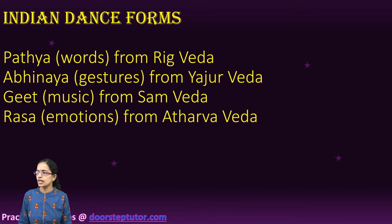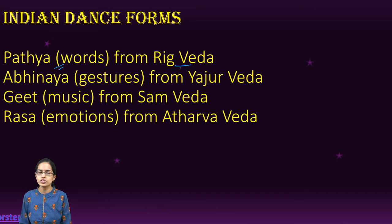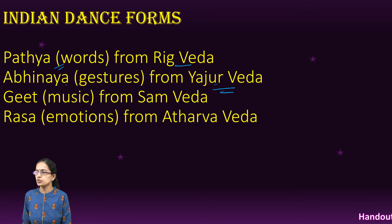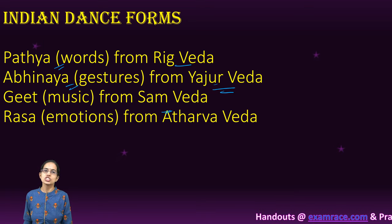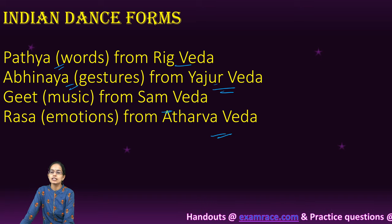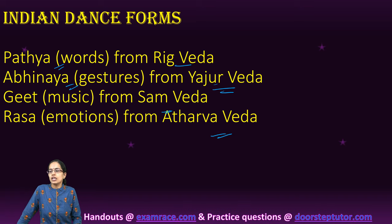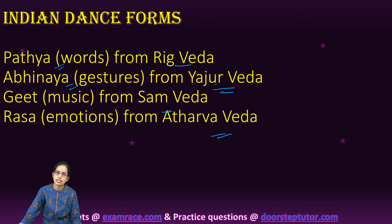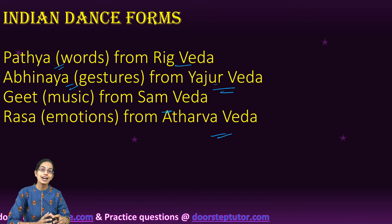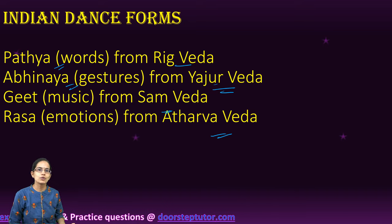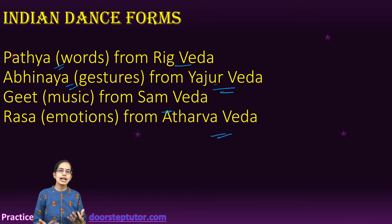Natya Shastra includes the Patya from the Rigveda, which is the word; the gestures from Yajurveda, known as the Abhinaya; Geet from Samaveda, which is the music; and finally the emotions from Atharvaveda, which is the Raas. All these amalgamated together form the concept of Natya Shastra and the various dances.